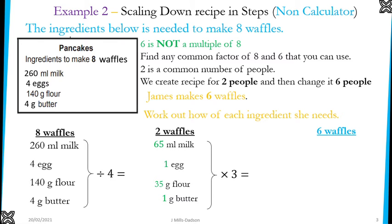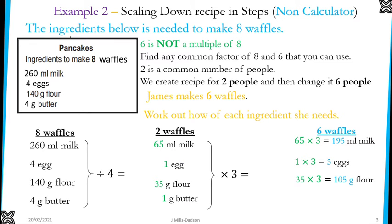This is what you have for 2 waffles. Now from 2 to 6, you multiply by 3 because 2 times 3 is 6. So you're going to multiply each of these ingredients by 3. This is the final answer for 6 waffles, and you can see these ingredients are smaller in quantity compared to the original because it's scaling down from 8 to 6.